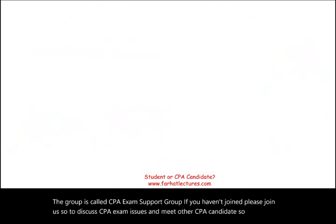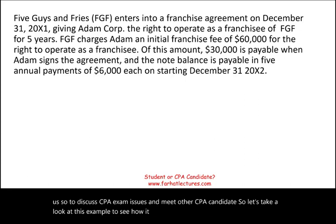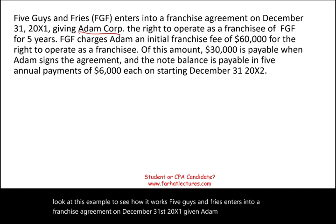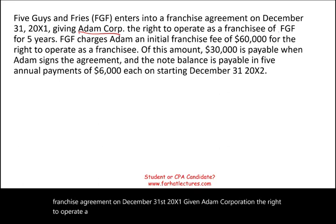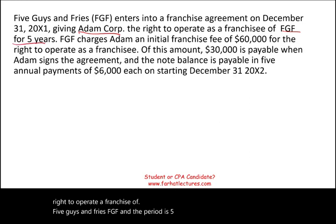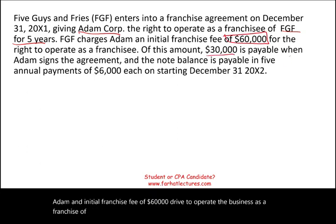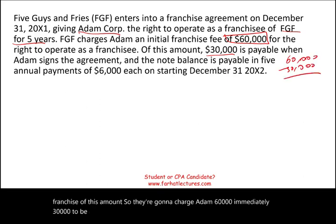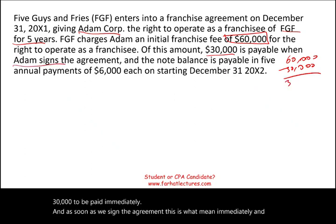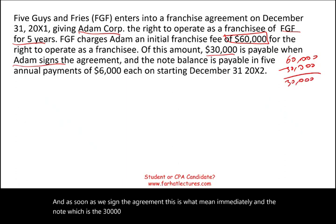Let's take a look at this example. Five Guys and Fries enters into a franchise agreement on December 31st, 20X1, giving Adam Corporation the right to operate a franchise of Five Guys and Fries (FGF) for a period of five years. Five Guys and Fries charges Adam an initial franchise fee of $60,000 for the right to operate the business as a franchise. Of this amount, $30,000 is to be paid immediately, and the remaining $30,000 — the note — Adam will pay in five installments.